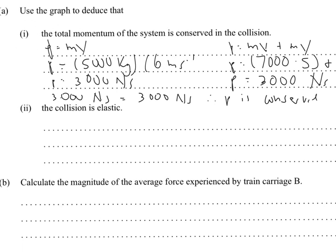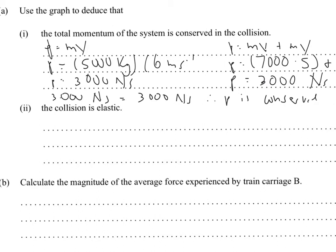The second question uses the graph to deduce that the collision is elastic. So, in an elastic collision, the kinetic energy is conserved as well as the momentum. So, the kinetic energy before the collision, again, KE equals 1 half mv squared. This is just of carriage A. So, you have KE equals 1 half 5,000 times 6 squared.